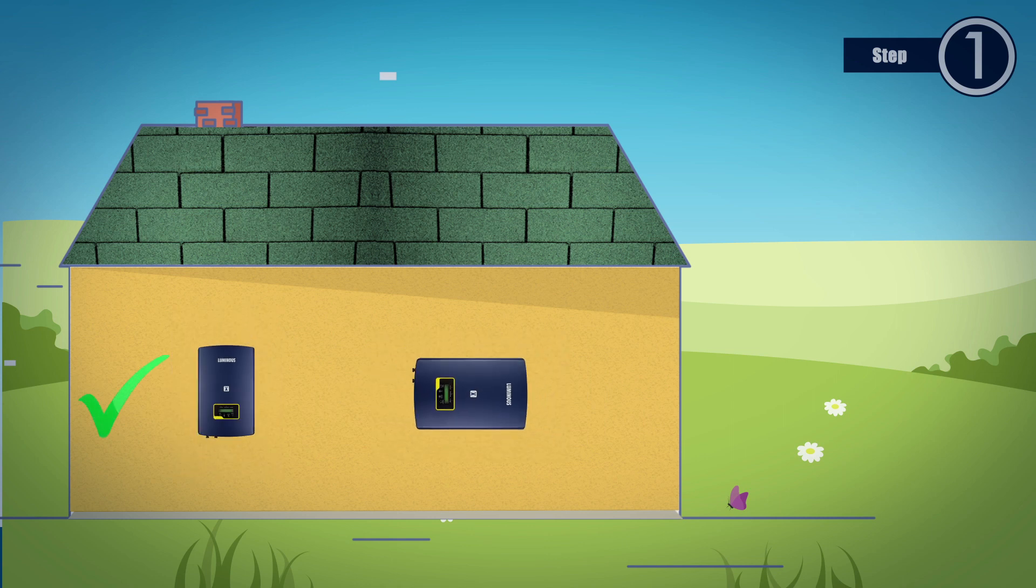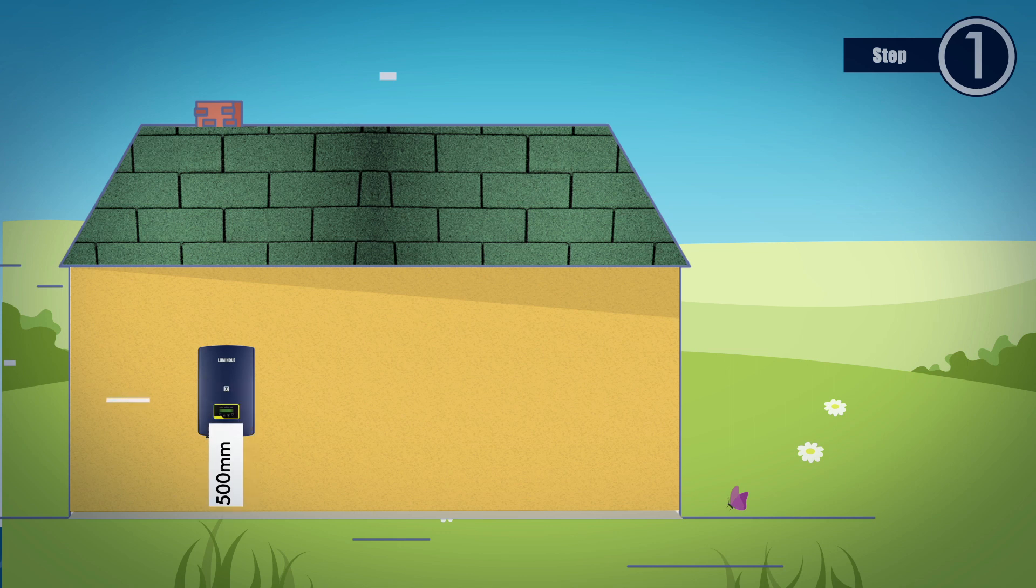Inverters should be mounted in a vertical position, having a minimum of 500 mm clearance distance from the ground, ceiling and the side walls.